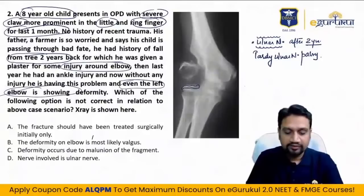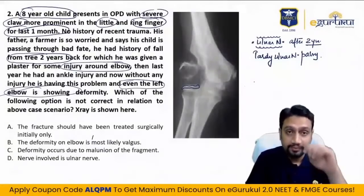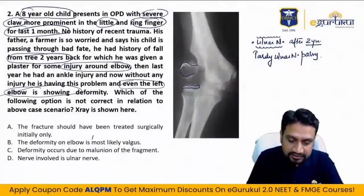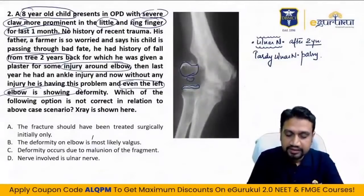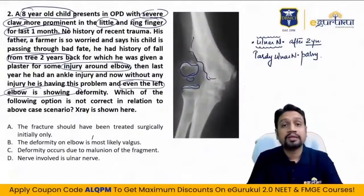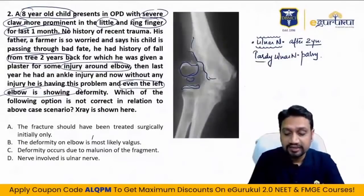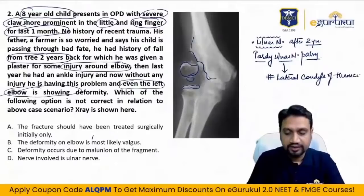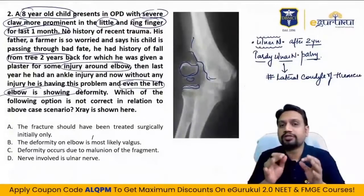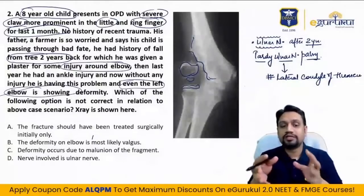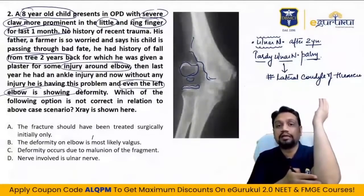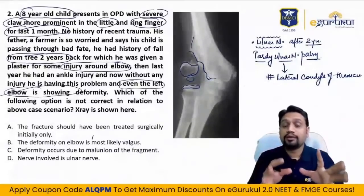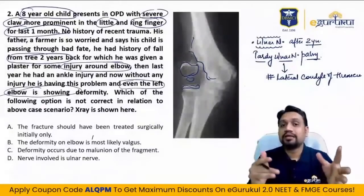Looking at the X-ray: the radial head is visible, and above it we should see the capitulum. The lateral condyle appears as a big chunk separated away from the primary bone. Tardy ulnar nerve palsy is associated with fracture of the lateral condyle of humerus. If the patient had injury and showed claw after one week, that suggests medial side injury — but here the nerve involvement is late, confirming tardy ulnar nerve palsy.